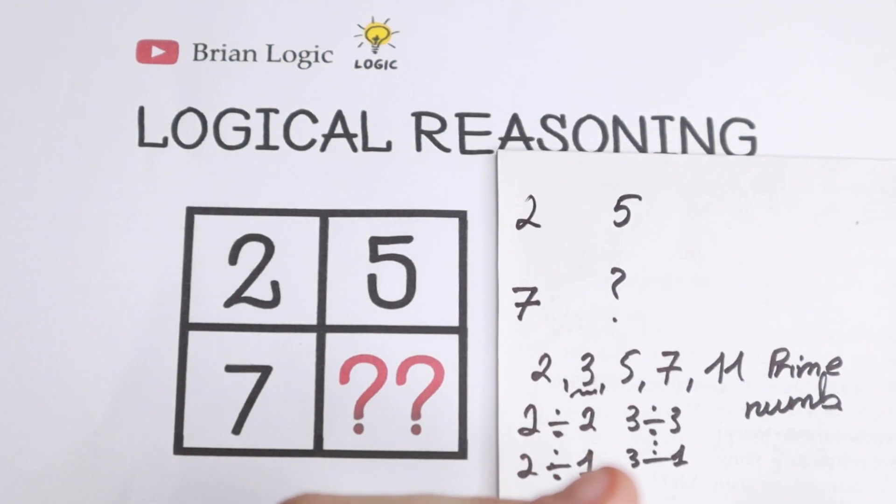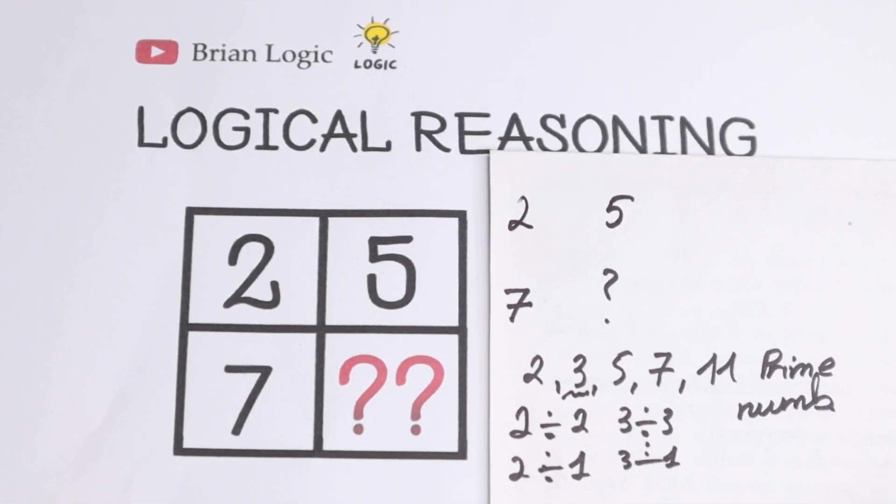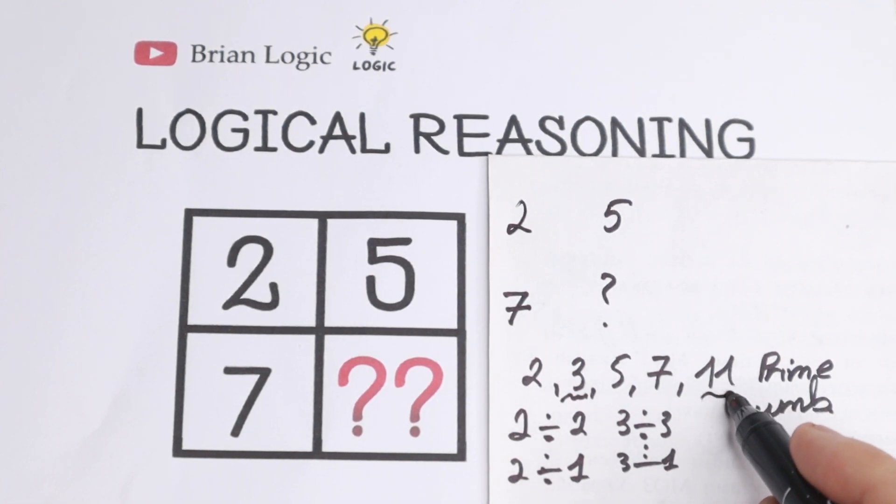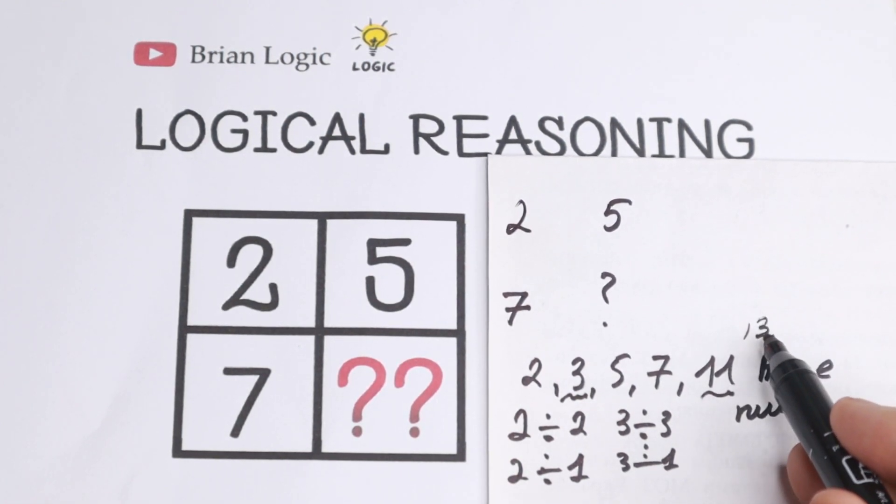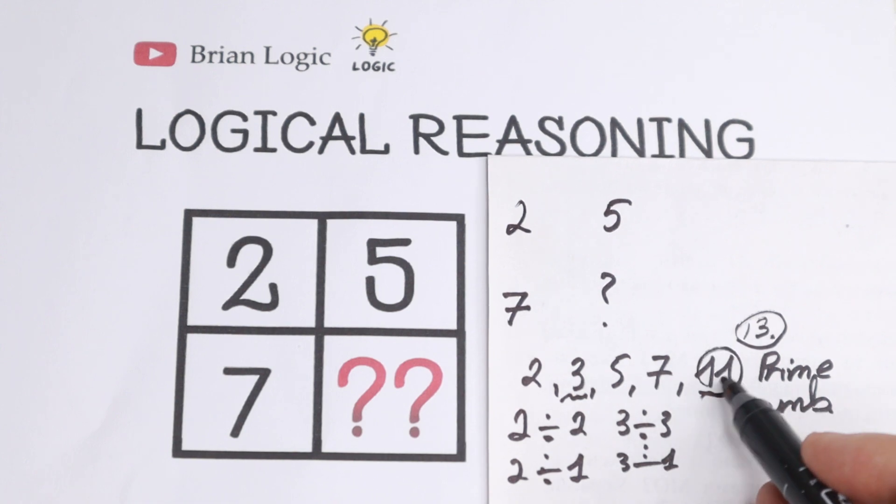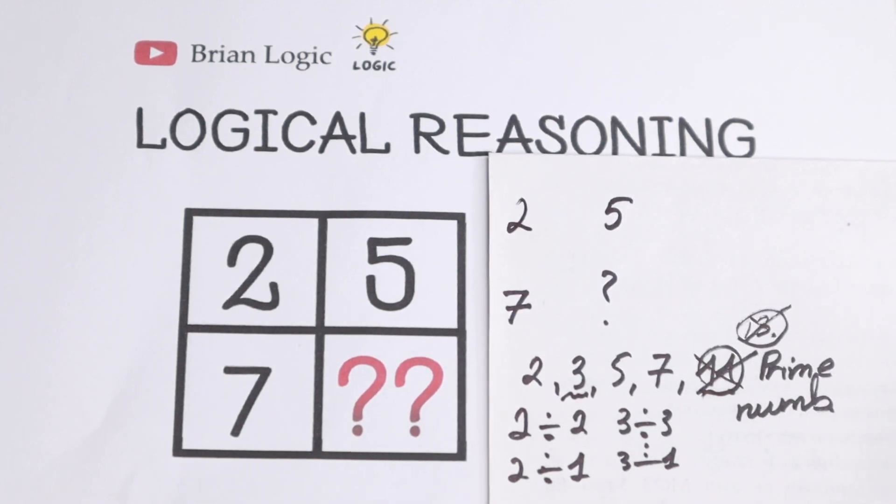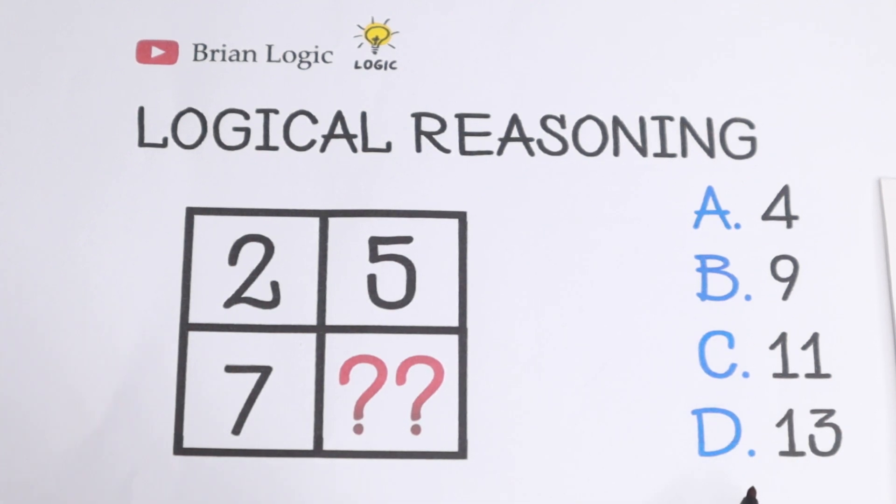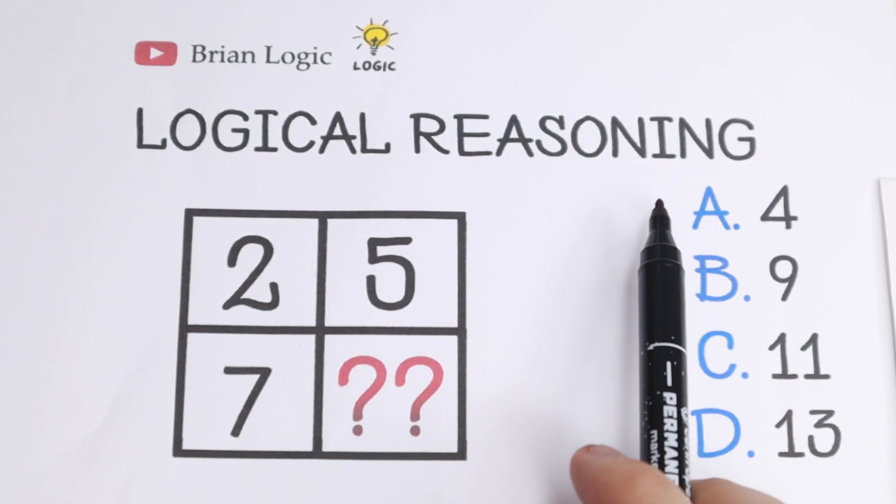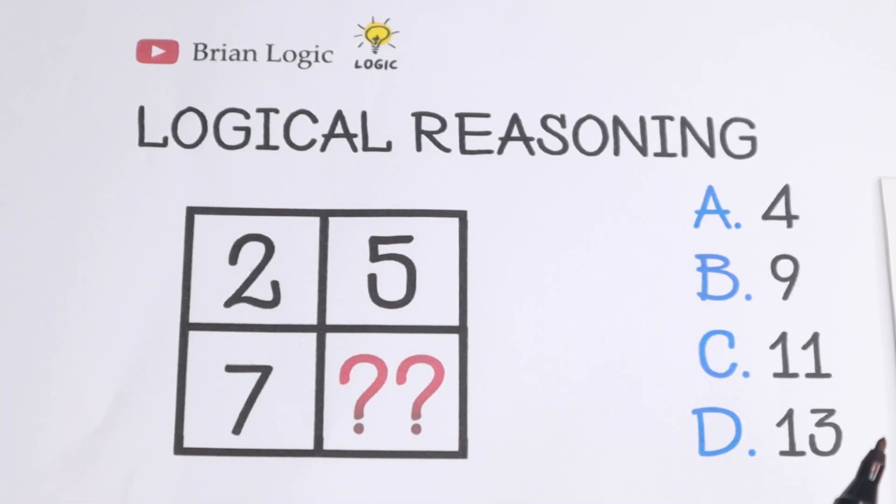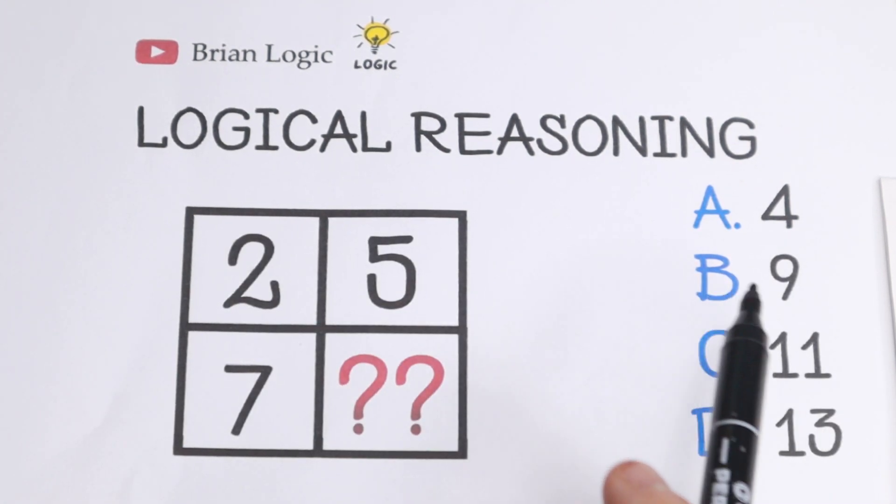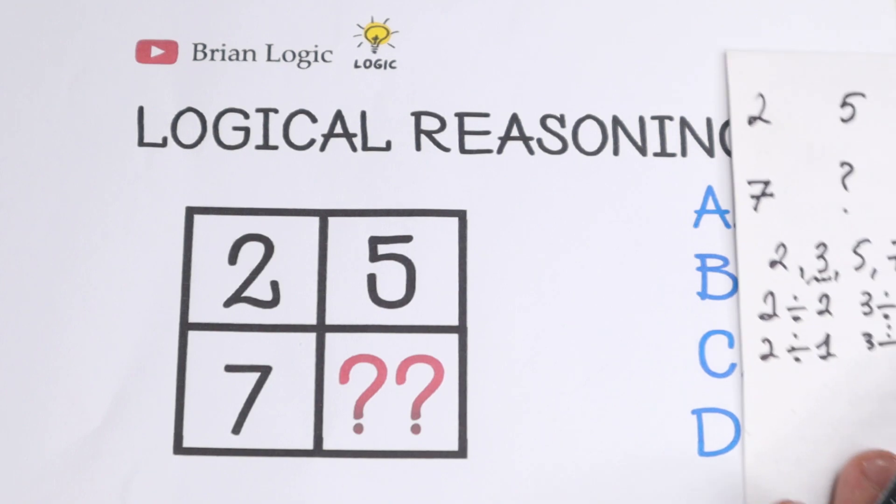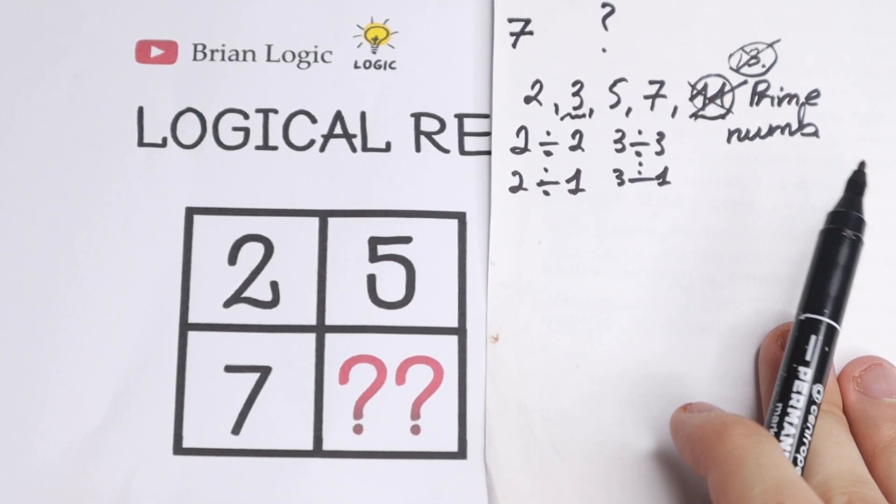But why is this approach good for us? Because if we're talking about prime numbers, right here we have 11 and the next one will be 13. So 11 and 13 we reject as well. We reject 11 and 13. So we're going to solve it with two options. We have 4 and 9, and right now we're going to find an option.